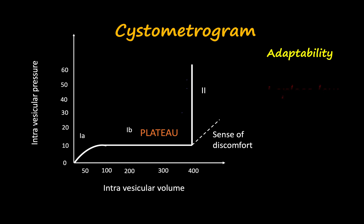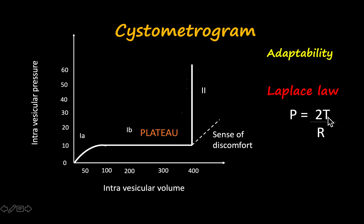This adaptability is due to both the plasticity of smooth muscle and Laplace's law. Laplace's law states that pressure in a spherical viscus equals twice the wall tension divided by the radius (P = 2T/R). In the case of the bladder, as tension T increases when the bladder fills with urine, the radius R also increases, so the pressure increase is minimal until the organ is relatively full — under 400 ml of urine.